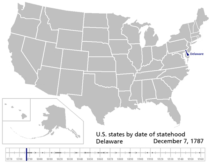The Constitution went into effect on June 21, 1788, after ratification by nine of the 13 states, and the federal government began operations under it on March 4, 1789. Since then, 37 additional states have been admitted into the Union.